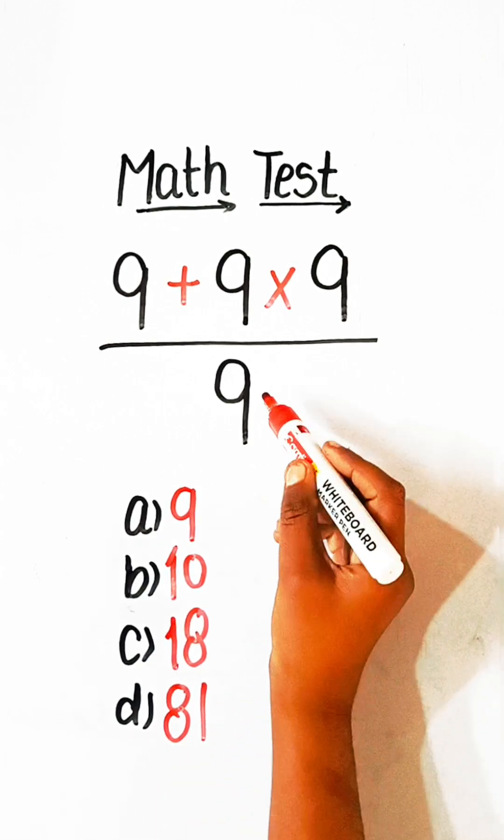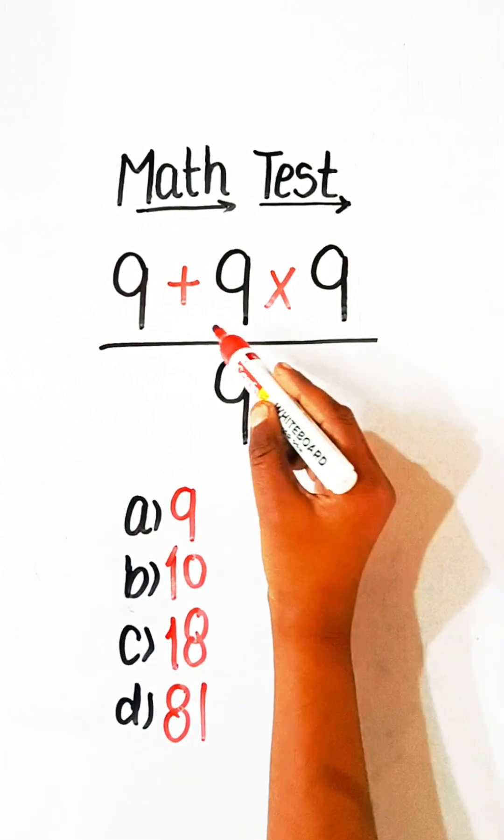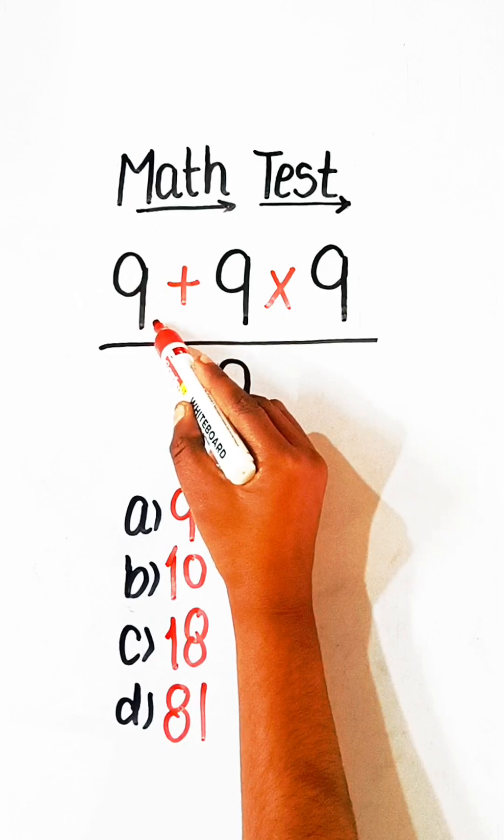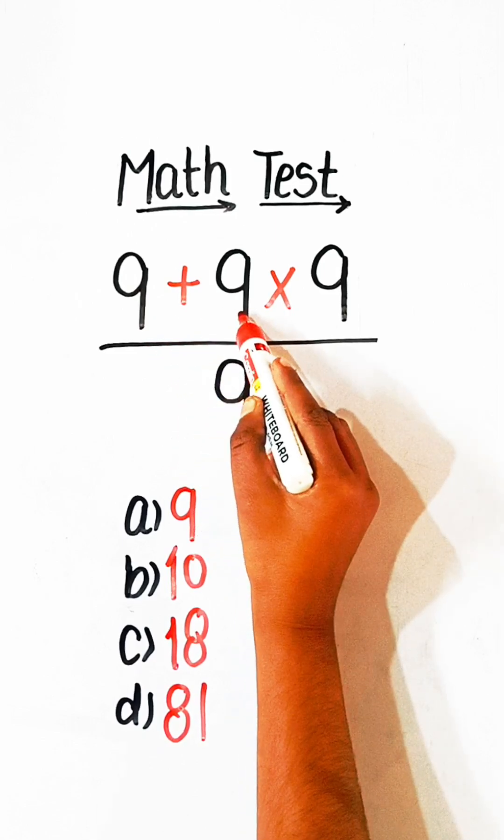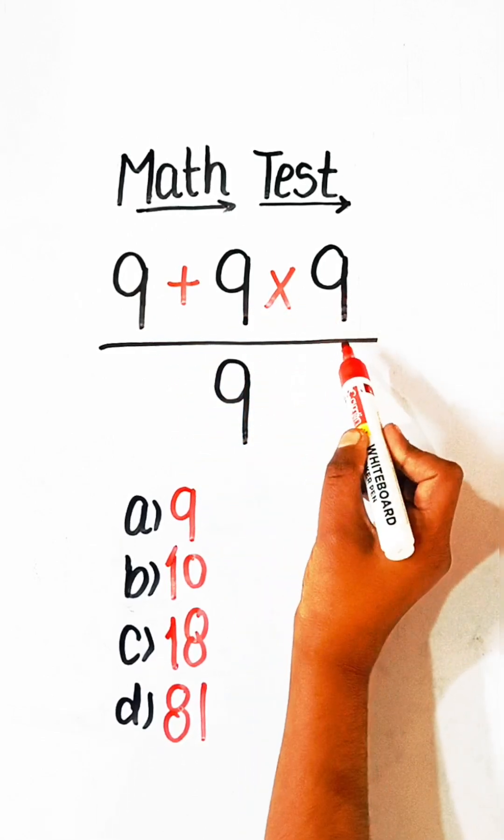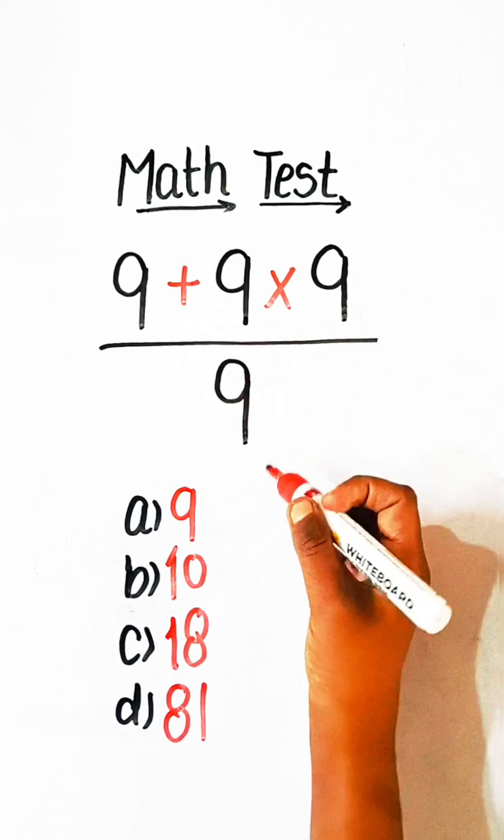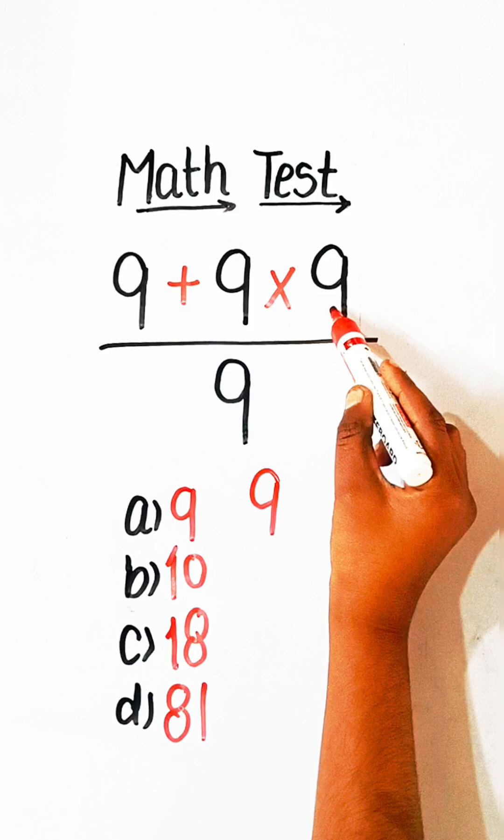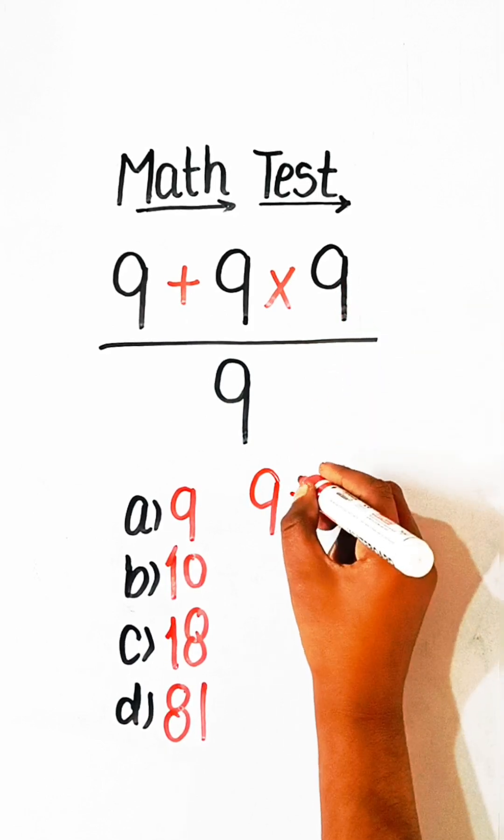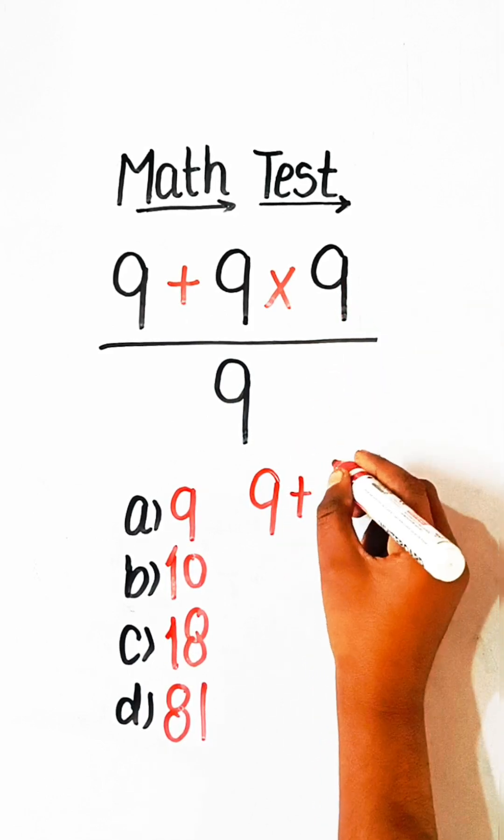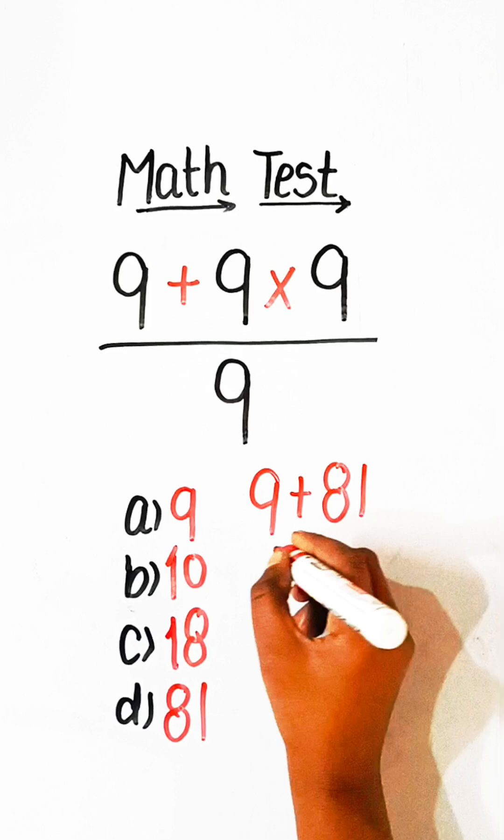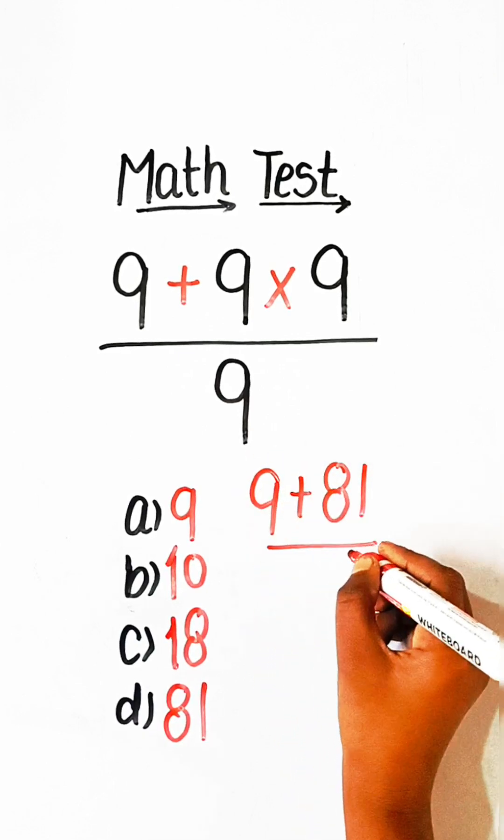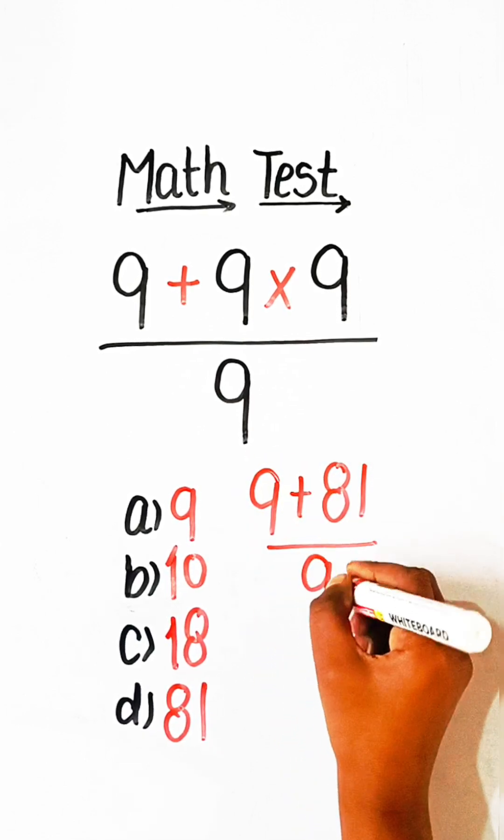So, let's solve this. Here we have 9 plus 9 multiplied by 9. We will solve the multiplication first. So, 9 times 9 is 81 plus upon 9.